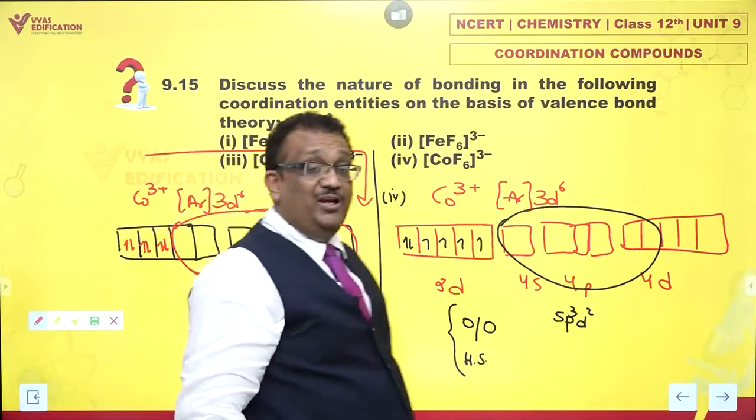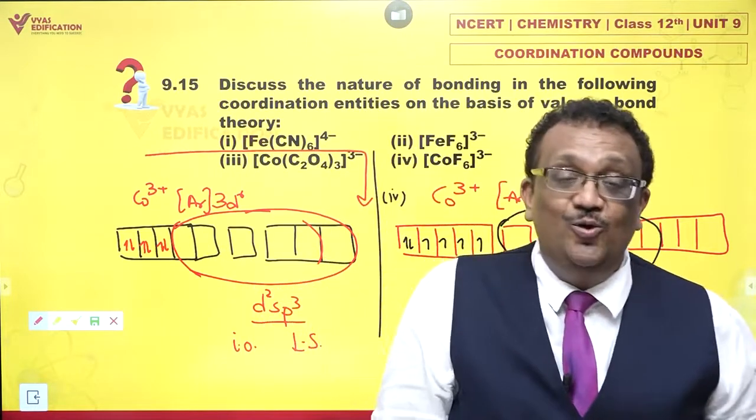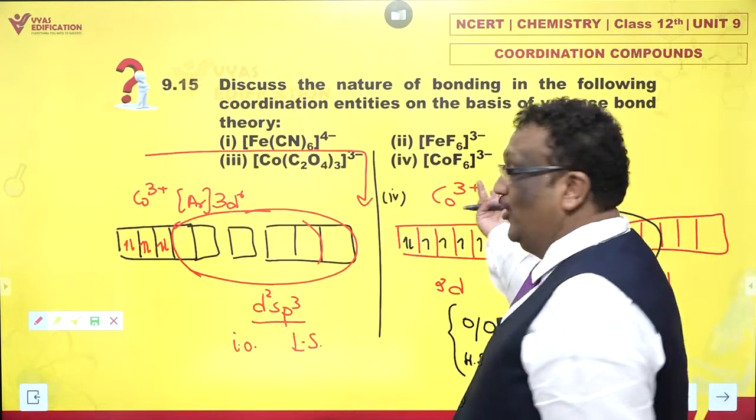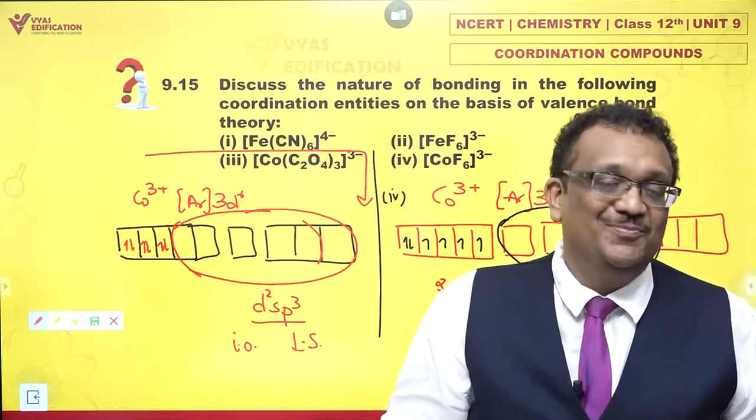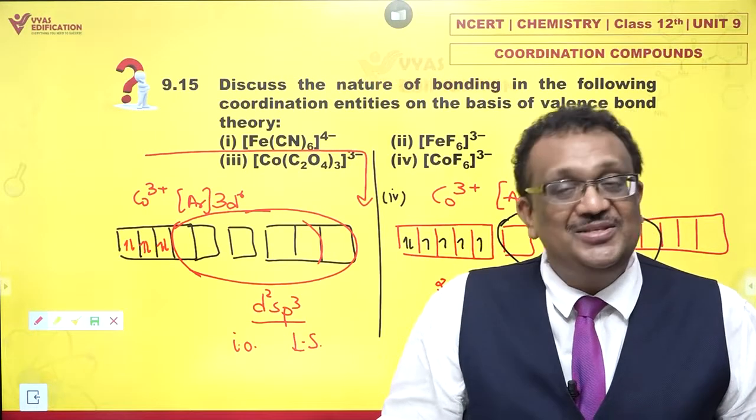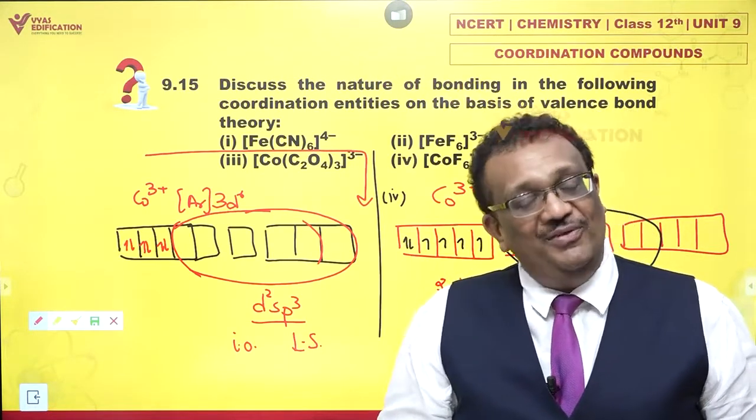This is being described? Yes. So 1 and 3 are inner orbital and low spin complexes. 2 and 4 are outer orbital and high spin complexes. This is the valence bond description of each of these complexes.